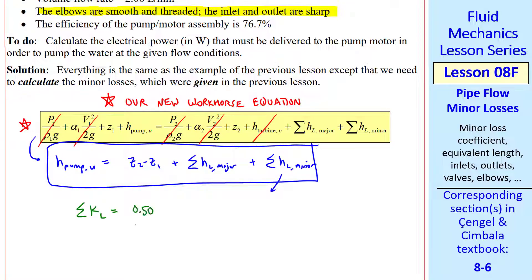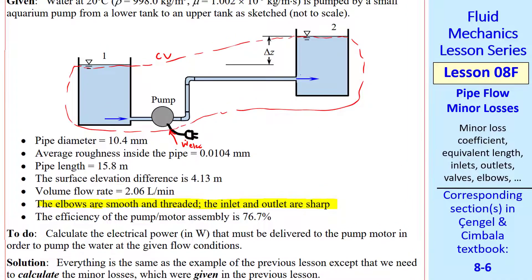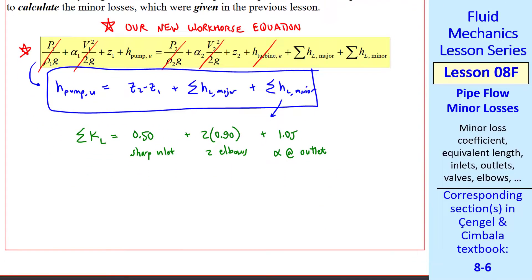Here, sigma KL is 0.50 for the sharp inlet, plus 2 times 0.90 for the two elbows, plus 1.05, which is alpha at the outlet. And in this case, we must include that since this jet is dissipating inside the tank, which is included in our control volume.